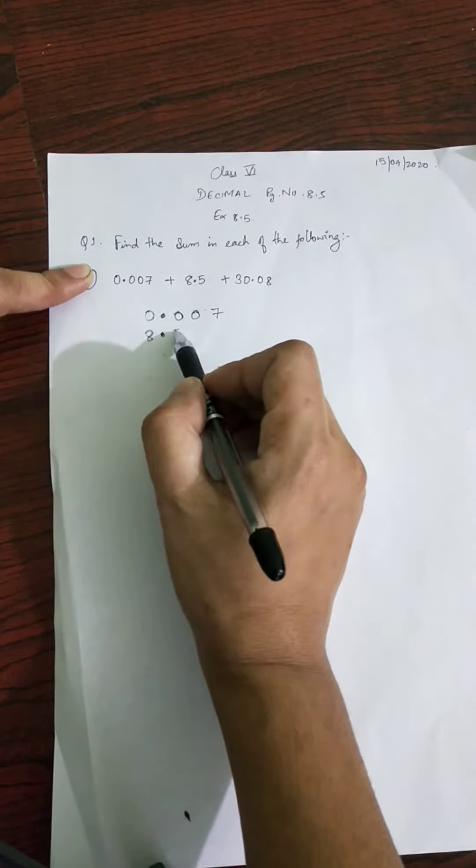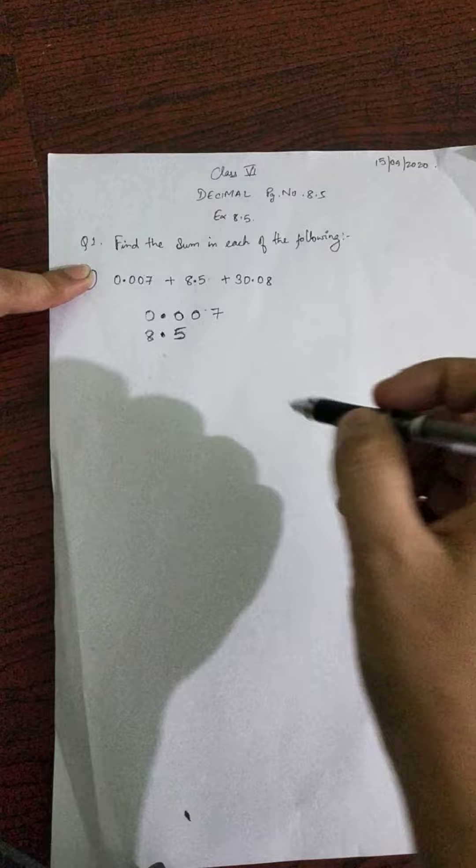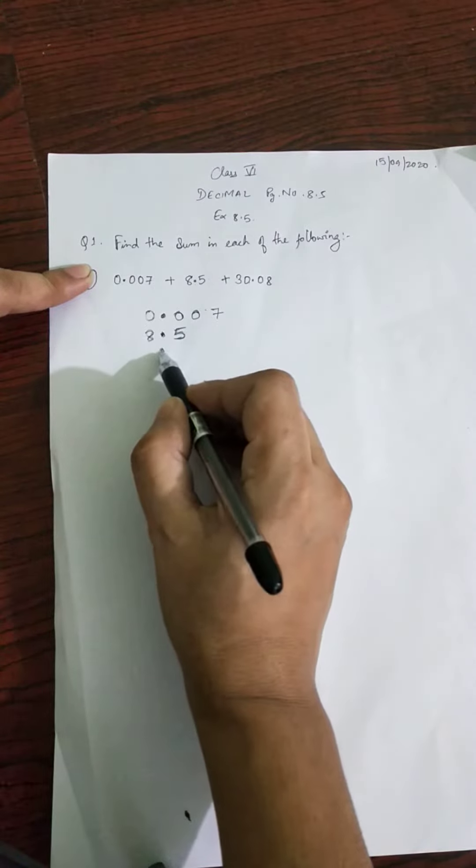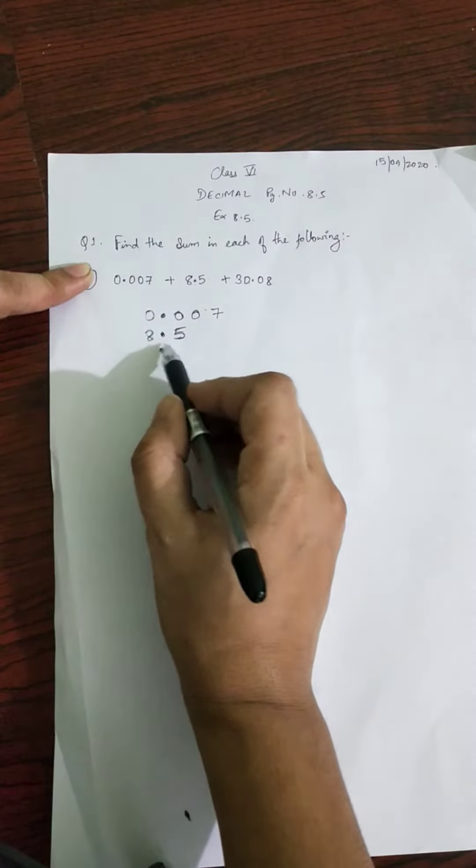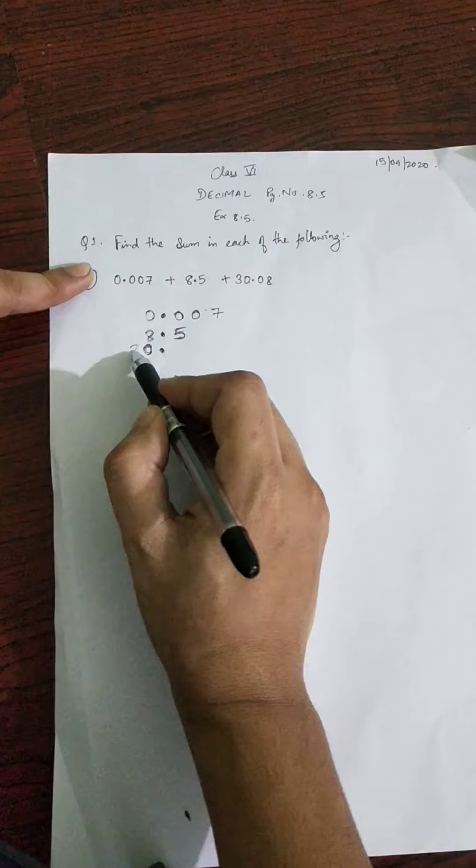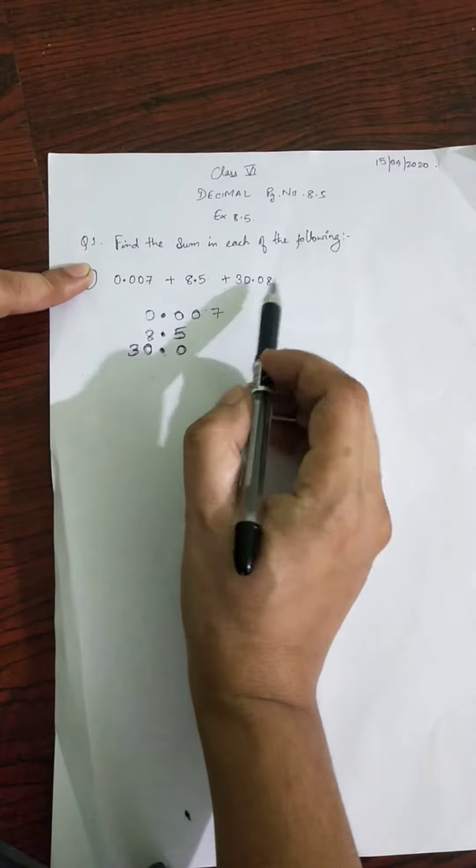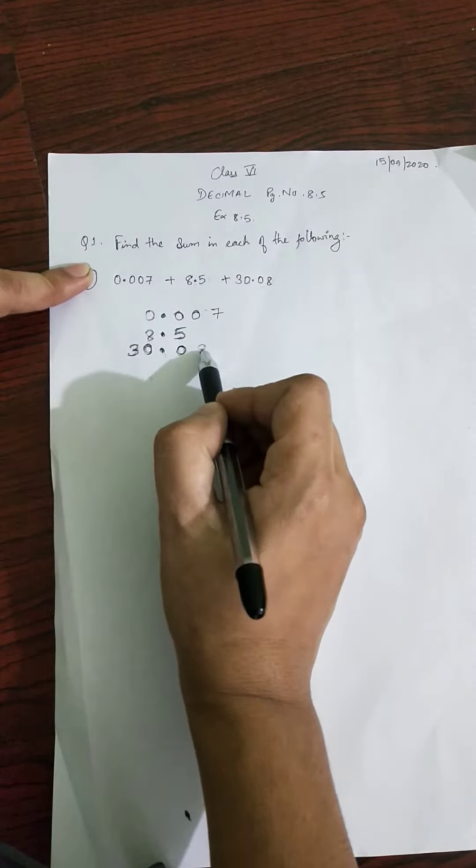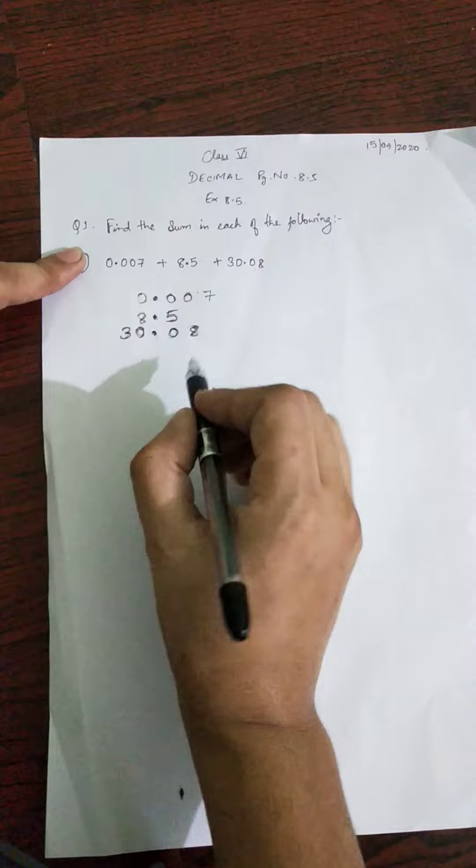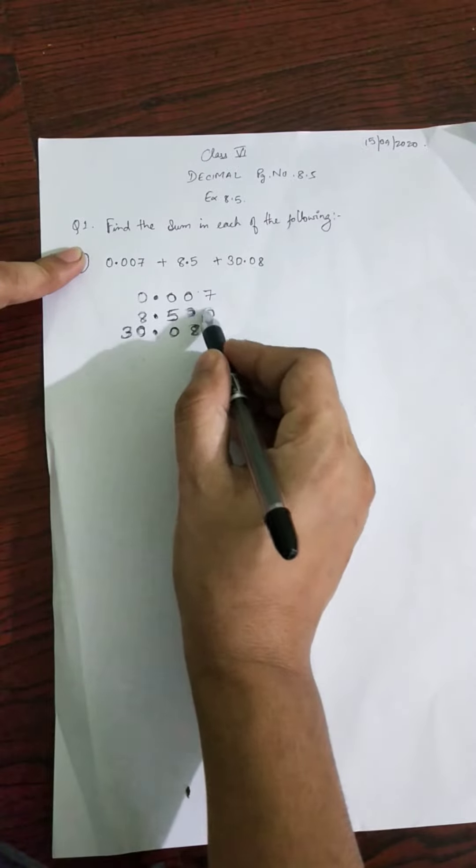Next, thirty point zero eight. My pen is not working. Thirty point zero eight - the decimal point goes here. Then zero point three two. We're going to make the decimal points in a straight line. Zero at the beginning. You put the decimal point in a straight line.